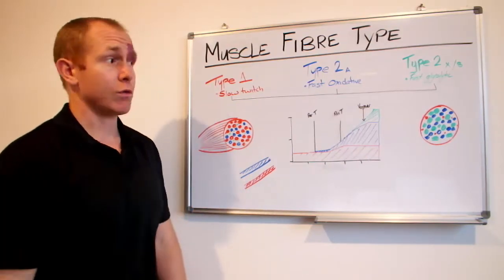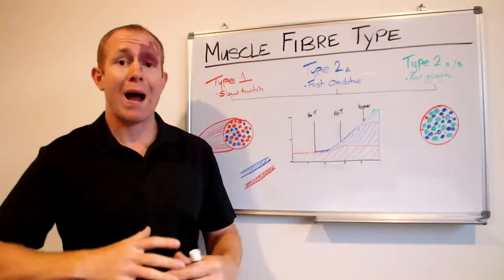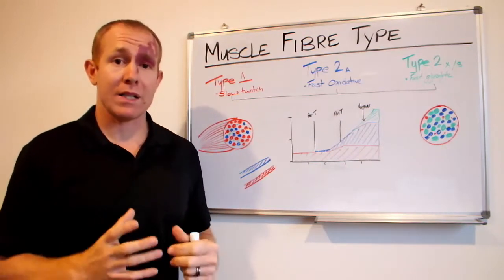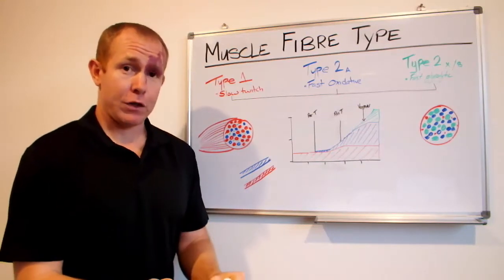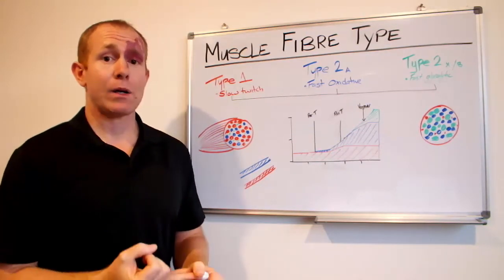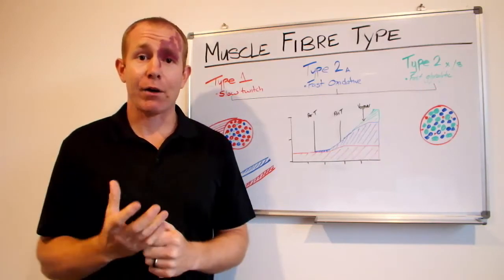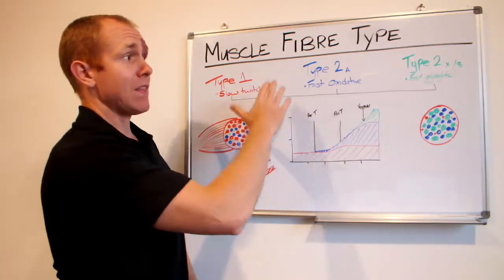Moving over here, we've got Type 2a muscle fibers. Now these are what are called fast oxidative muscle fibers and these are a combination of quite a few mitochondria but also a big capacity to produce energy anaerobically through the anaerobic glycolytic energy system, and they're quite big as well.